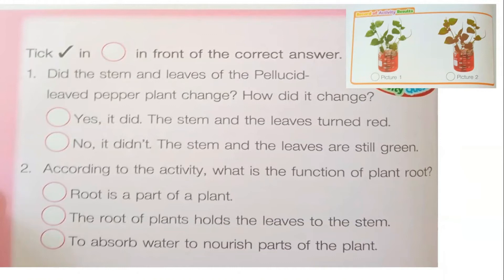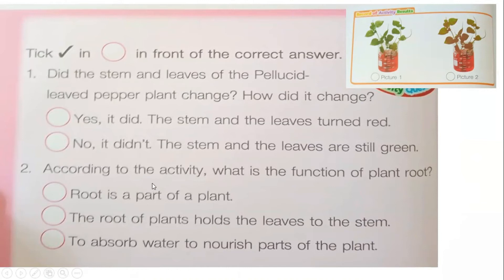How did it change? The first circle: Yes, it did — the stem and the leaves turned red. Or the second circle: No, it didn't — the stem and the leaves are still green. The stem and leaves remained green. Kids, answer on your own.